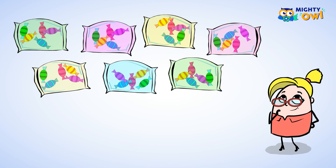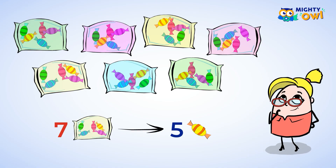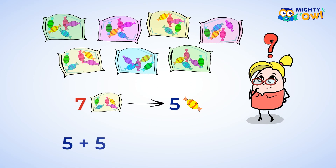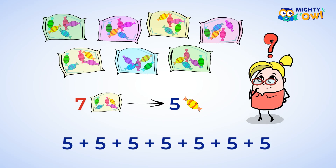Imagine that you have seven packages of candy. Each package has five pieces of candy in it. You want to know how many pieces of candy you have. You could count them all, or you could add up five plus five plus five plus five plus five plus five. That's a lot of fives to add up. Hopefully, you don't forget to add a five or to not add enough fives.